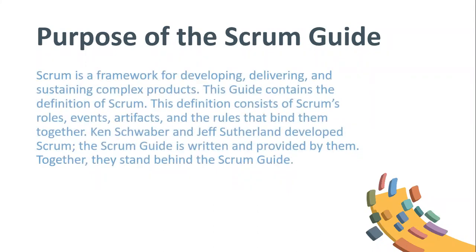Purpose of the Scrum Guide. Scrum is a framework for developing, delivering, and sustaining complex products. This guide contains the definition of Scrum. This definition consists of Scrum's roles, events, artifacts, and the rules that bind them together. Ken Schweber and Jeff Sutherland developed Scrum. The Scrum Guide is written and provided by them. Together, they stand behind the Scrum Guide.